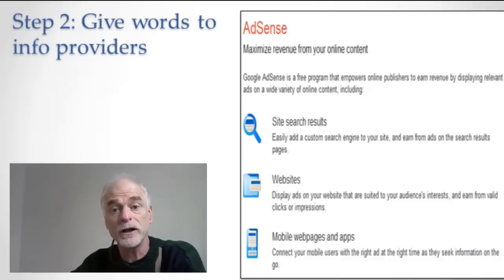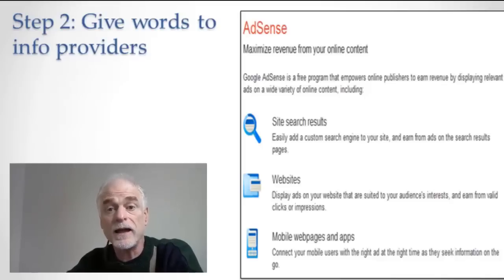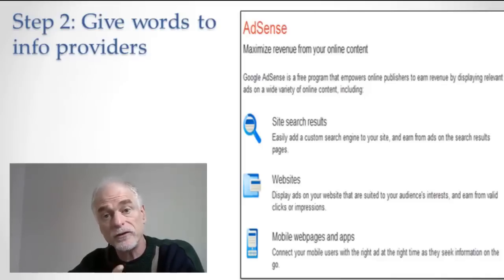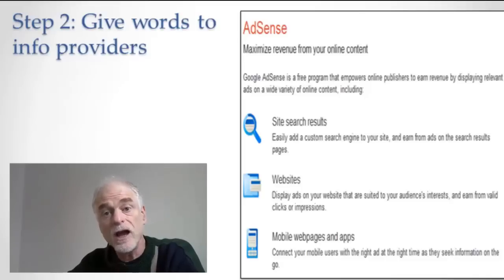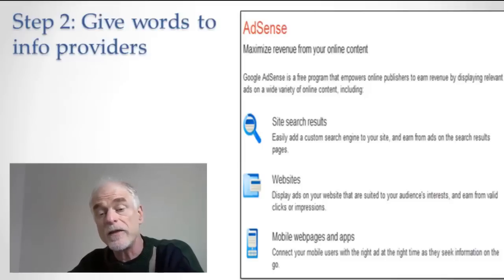And you click through. When you click, Google sees that you've clicked so they know how to charge for that click. And you're then routed to the advertiser. So they're selling words to the advertisers and giving the words away to the content providers, so that the content providers can serve targeted ads on their website. And then the final thing is...